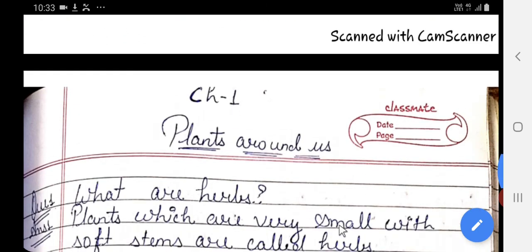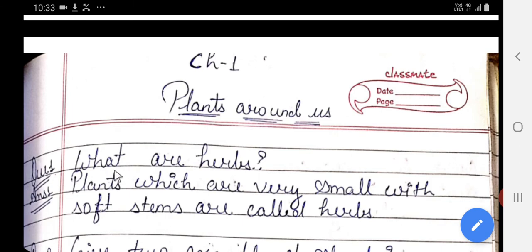Now let's go to question answers. What are herbs? Plants which are very small with soft stems are called herbs.